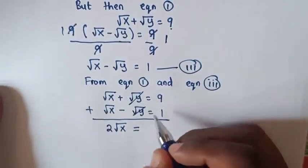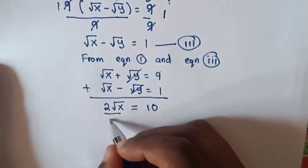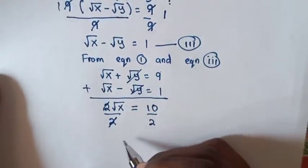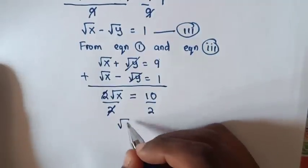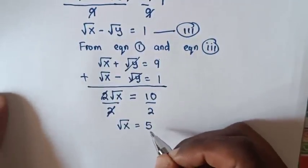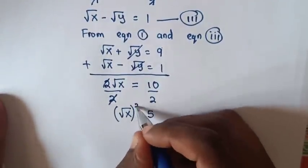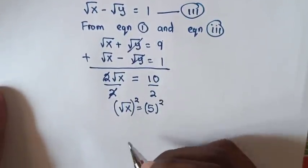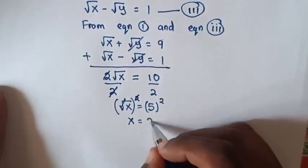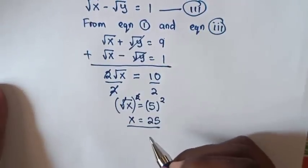Dividing both sides by 2, square root of x equals 5. Squaring both sides to find x, x equals 5 squared, which is 25. So x equals 25.